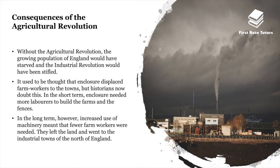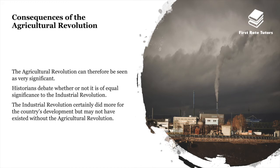Without the agricultural revolution, the growing population of England would have starved and the Industrial Revolution would have been stifled. It used to be thought that enclosure displaced farm workers to the towns, but historians now doubt this. In the short term, enclosure needed more labourers to build farms and fences. In the long term, however, the increased use of machinery meant fewer farm workers were needed, and they left the land for industrial towns in the north. Although historians debate its significance relative to the Industrial Revolution, the agricultural revolution certainly propelled the wider industrial revolution.